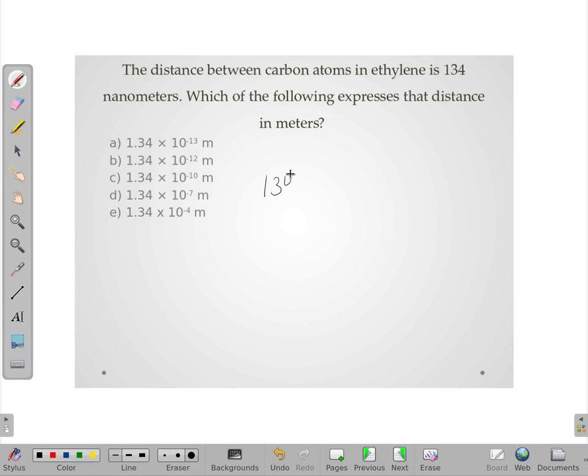All right, so 134 nanometers is actually the same as 134 times 10 to the negative 9th meters, with the decimal right there.